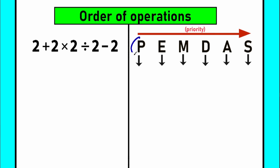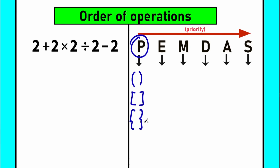Letter P has the highest priority, and we work from left to right. P stands for parentheses — this type of bracket. People also use square brackets or squiggly brackets depending on their country; these are all grouping symbols. Whenever we have an expression with parentheses, we evaluate that expression as the first step.